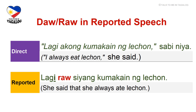Pay attention to the changing of pronouns between the Tagalog direct and reported statements — ako became siya in reported speech. But you don't have to worry about verb tense, because in Tagalog reported speech the verb tense remains the same; the present tense kumakain is used in both. Raw is placed right after the first word of the direct speech. In this example, raw is the equivalent of 'she said that': Lagi raw siyang kumakain ng lechon — she said that she always ate lechon.